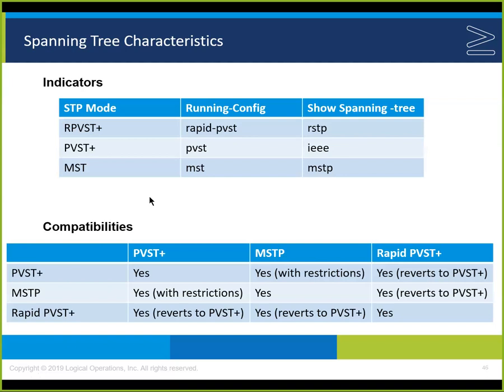Looking at compatibility: per-VLAN spanning tree plus and rapid — can they communicate? Yes, but they revert to per-VLAN spanning tree, giving the slower setup. Multiple spanning tree with per-VLAN — yes, with restrictions. Rapid with per-VLAN — yes, reverts. Multiple with multiple — yes, stays rapid. Rapid to rapid — yes, they communicate with their own protocol. Multiple spanning tree uses RSTP for rapid convergence and enables multiple VLANs to be grouped and mapped to the same spanning tree instance.